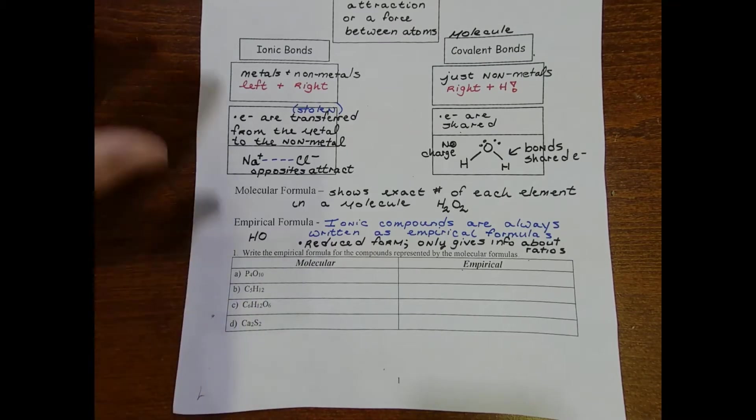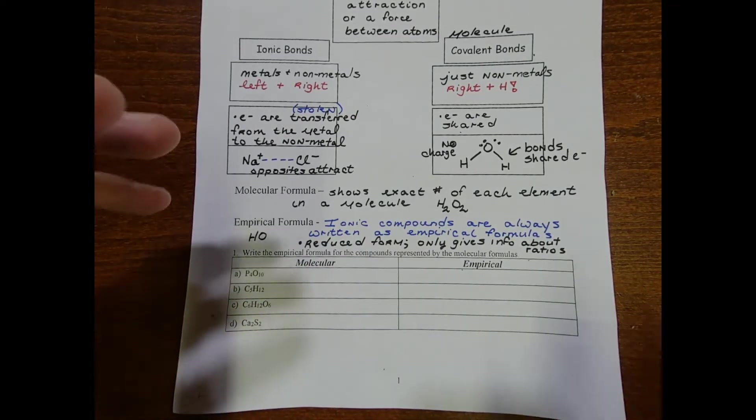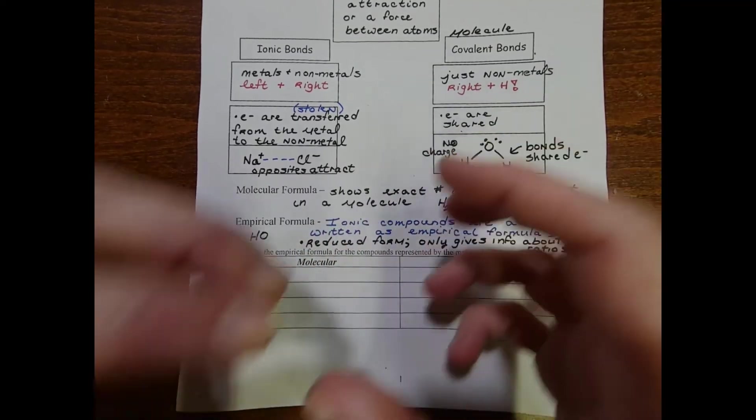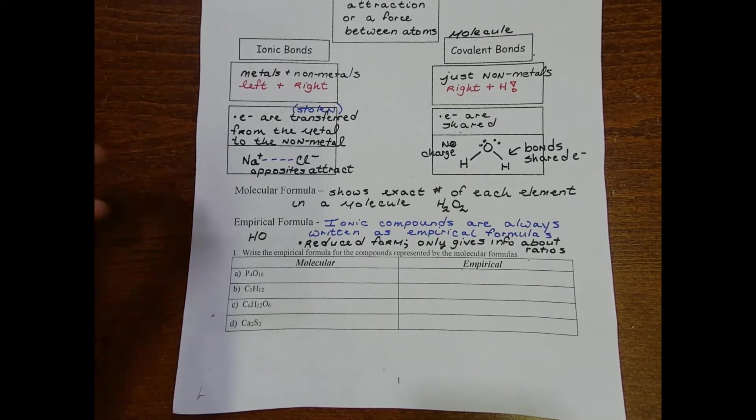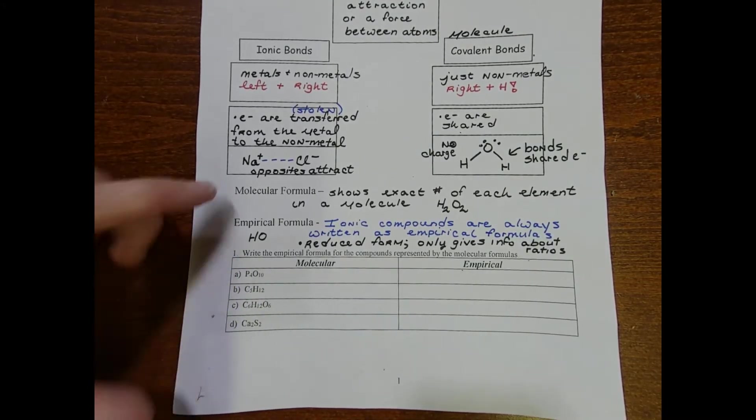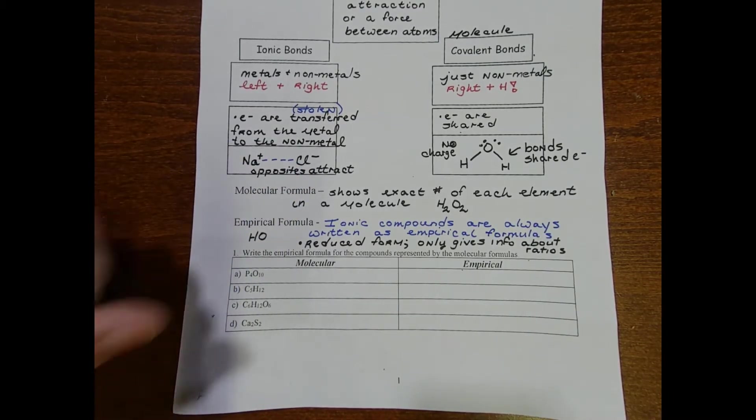An empirical formula is more appropriate for ionic compounds because as we discussed in an earlier lecture, those ionic compounds have the potential to continue in all directions to get to very high numbers of atoms. We don't want to say we have 100 sodium and 100 chloride, we're just going to reduce it down to 1 to 1.